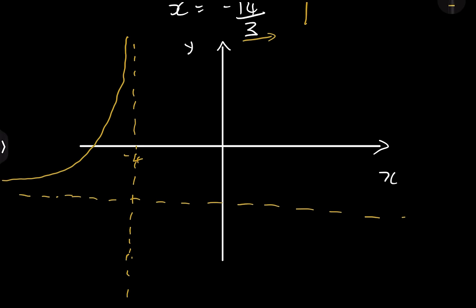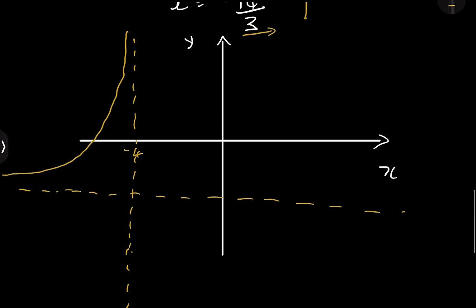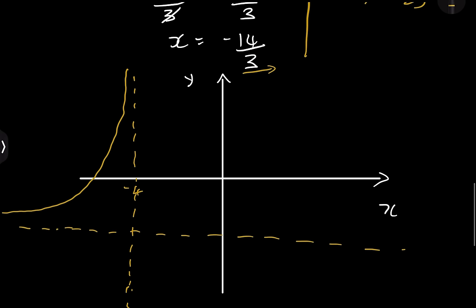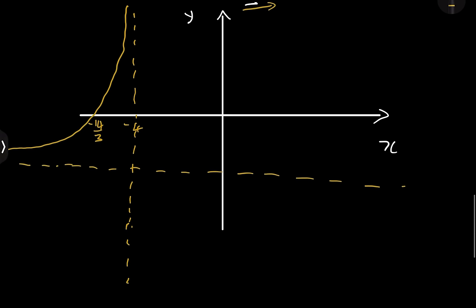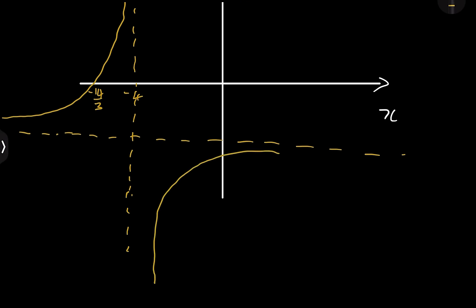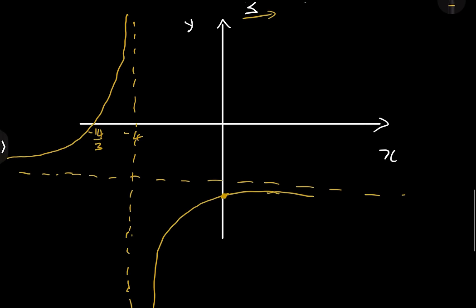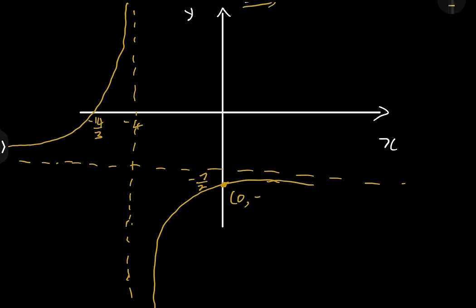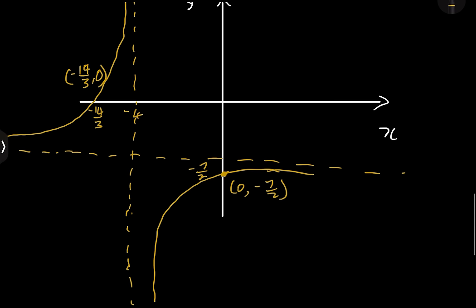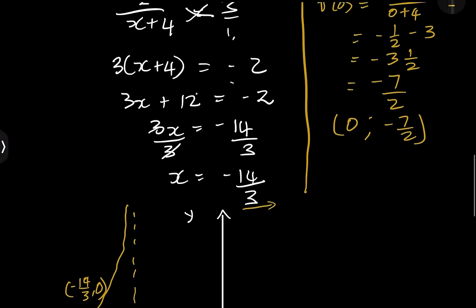So the graph touches the x-intercept at -14/3 and has a y-intercept at -7/2. Since a is negative, one branch is in the second quadrant and one is in the fourth quadrant. Make sure you label the point (0, -7/2), the point (-14/3, 0), and clearly show both asymptotes y = -3 and x = -4. That is how the cookie crumbles!